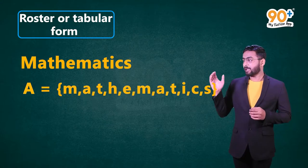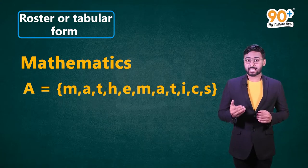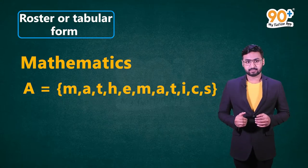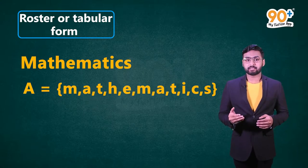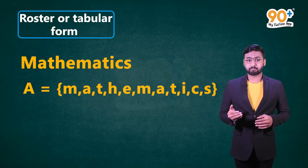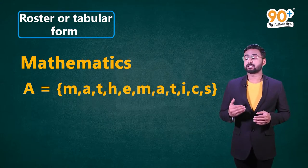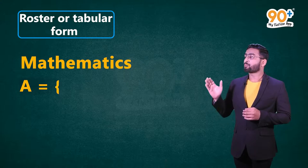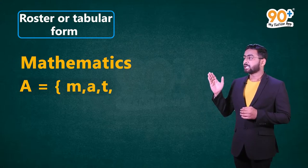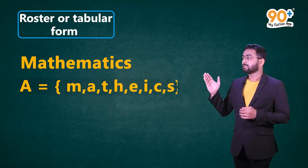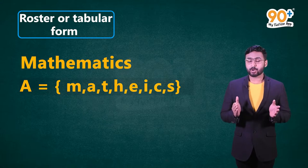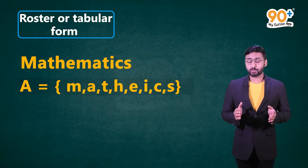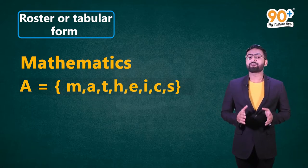Any capital letter can be used to denote a set, while its elements are denoted using small letters. However, there is one tiny detail: elements in a set are never repeated — every element appears just once. So the solution to the set of all letters in the word 'mathematics' will list each letter only once. This is how we present a set in roster or tabular form by listing out all its elements. We can see that A is an element of set A.